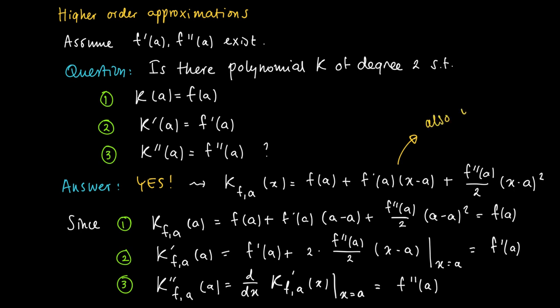So we build up the second order approximation by taking the linear approximation and adding some quadratic term. And you may show yourself that actually this one is also uniquely determined. So there is only one polynomial K of degree 2 with the properties 1, 2 and 3.